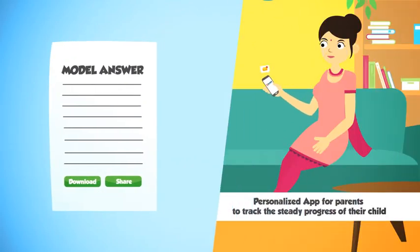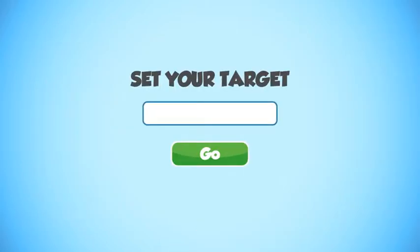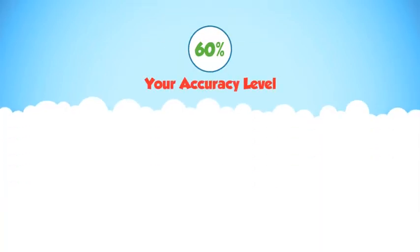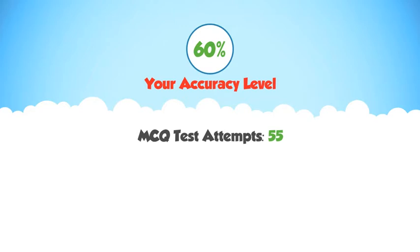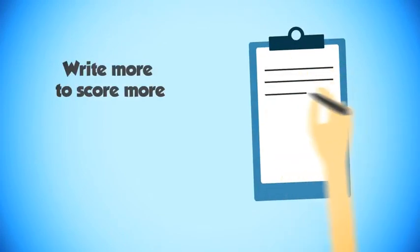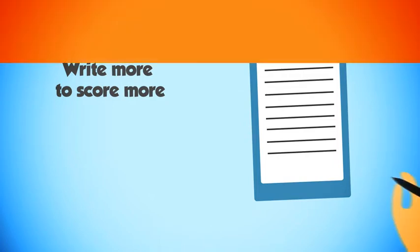Every question paper comes with a model answer set, on accessing which a download notification is sent to the parent. To make things more interesting, iScore now offers a set target option, which helps students like Rahul to check their capabilities of achieving set targets. Segments like accuracy level in reports give an overview of tests attempted and downloaded, and gives a performance comparison for each subject. iScore gives Rahul ample writing practice, which enhances his memory while offering good revision.